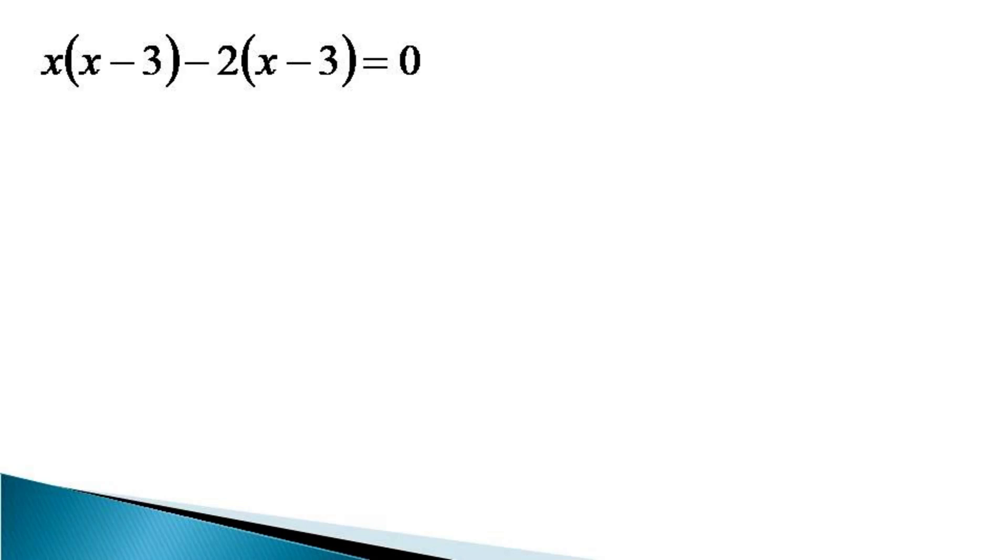x minus 3 is taken common from whole of the equation to get x minus 3 into x minus 2 is equal to 0, which gives us two solutions of the equation as x is equal to 3 and x is equal to 2.